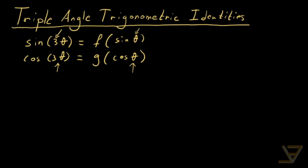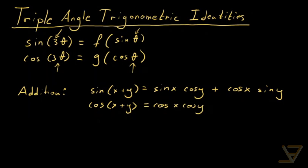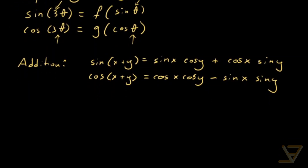To achieve this goal we're going to use several trigonometric identities. First we're going to need the addition identities: sine of x plus y is equal to sine x cos y plus cos x sine y. The cosine variant says that cos of x plus y is equal to cos x cos y minus sine x sine y. We can use these to deduce the double angle identities by substituting x equals y.